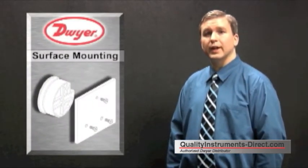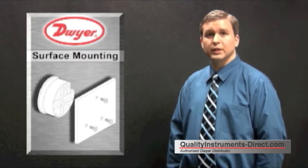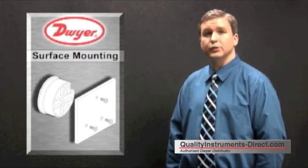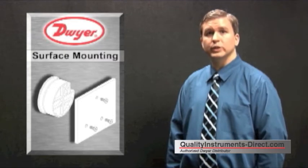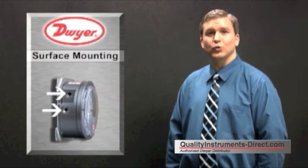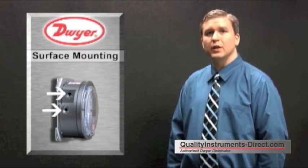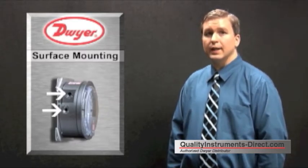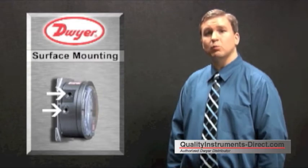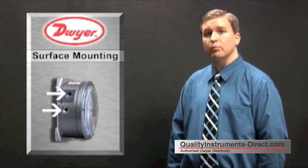If you wish to simply mount the gauge directly to a surface, use three 6-32 machine screws of appropriate length to reach through the thickness of the surface. Of course, using the surface methods, the process tubing must be connected to the side of the gauge and not through the back connections unless proper holes are drilled through the bracket and wall.